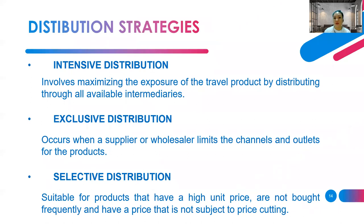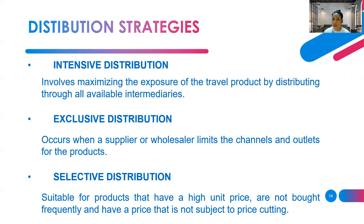There are different distribution strategies a product supplier may use. First is intensive distribution, which involves maximizing the exposure of the travel product by distributing through all available intermediaries. For example, airline companies use all kinds of platforms — their website, the global distribution system, social media, and travel agents at ticketing offices.